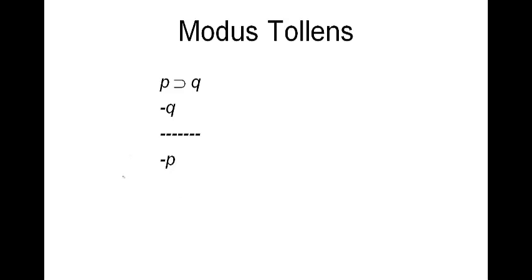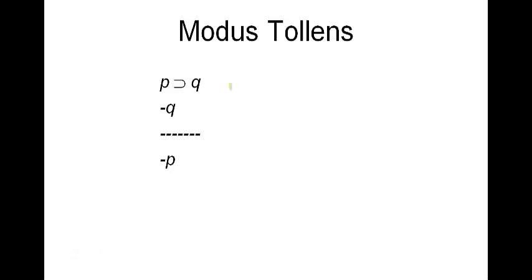Modus tollens works as follows: if you have 'if p then q' and not-q — the negation of the consequent — as a premise, then you can conclude not-p. For example: if I go to the store, then I'll spend money; I didn't spend money; therefore, I didn't go to the store. Put your own example in for modus tollens and you'll see it follows.